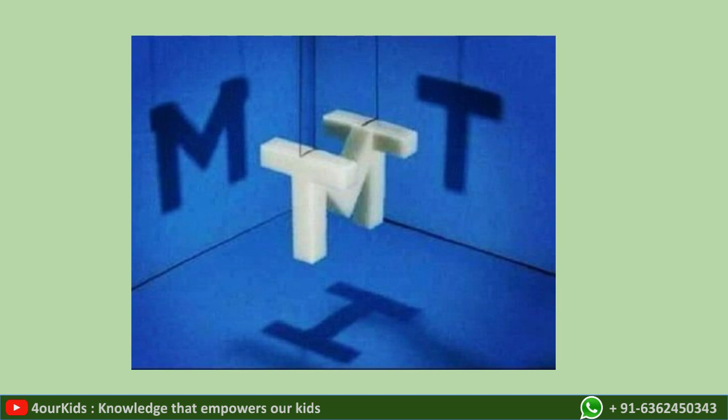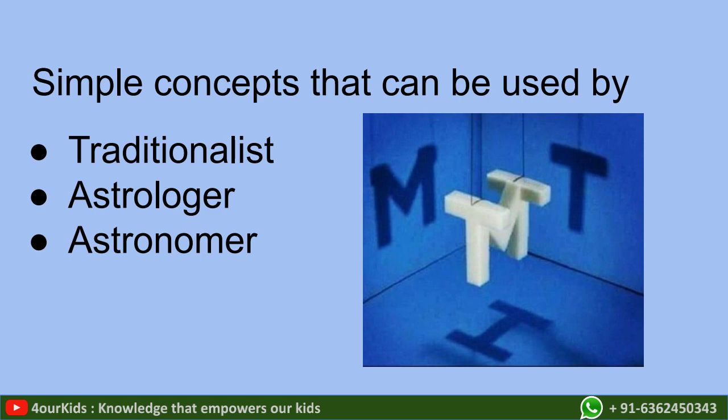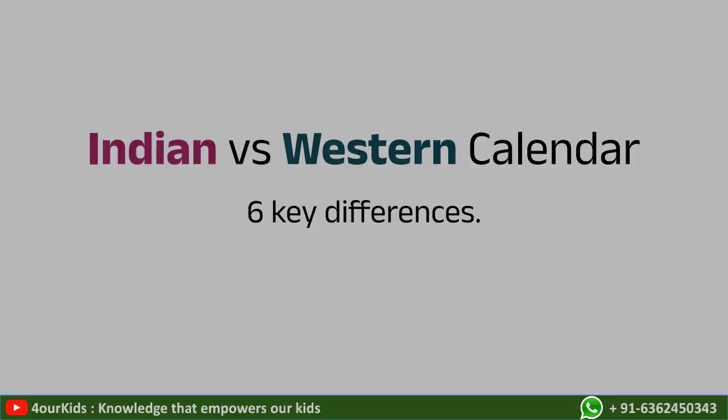What makes such a deep technical book bought by an average village family? As seen in this diagram, we have a complex white-colored object, and as seen from different perspectives and positions it would appear like an M, T, or H to different people. Similarly, the Hindu calendar is presented in such a way that simple concepts can be used by a traditionalist, an astrologer, or an astronomer.